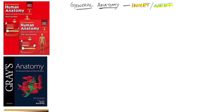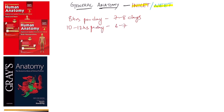If you are studying an average of eight hours per day, you need to spend a minimum quality of seven to eight days for anatomy. If you are hitting ten or twelve hours per day, you can crack anatomy in six to seven days. If you are reading more than this, you can finish anatomy as fast as possible.